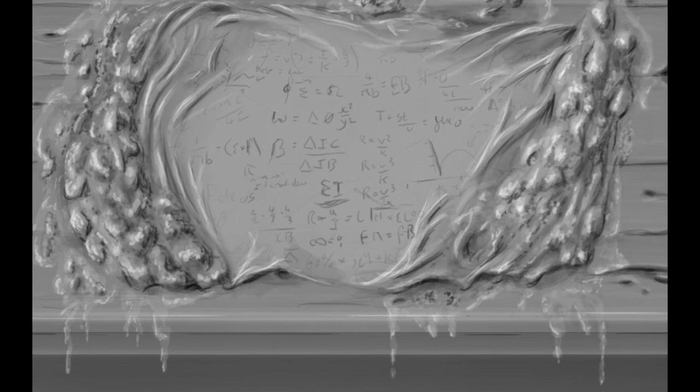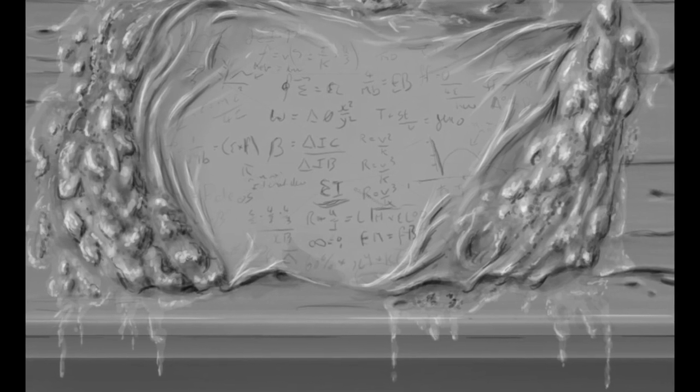What this formula proves is that we missed a number somewhere. Imagine if all our technology was based on the belief that after 4 came 6. We simply didn't know or conceive of 5. That is, in essence, what this formula proves. We missed a number.